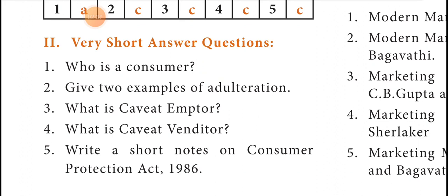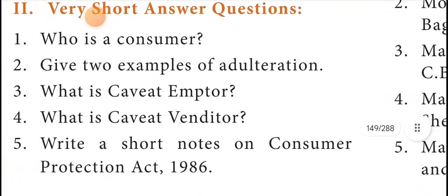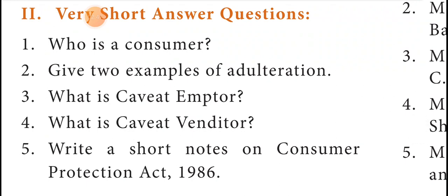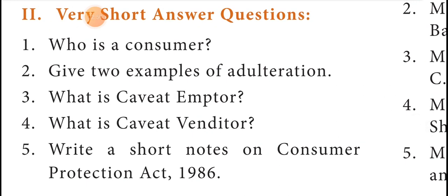Give two examples for adulteration. Mixing of stones with grains. Mixing of coconut oil with pomali. Papaya seed is added with black pepper. Coffee powder is adulterated with tamarind seed.